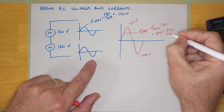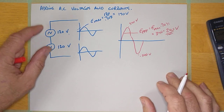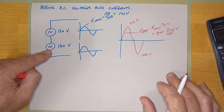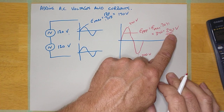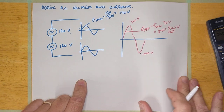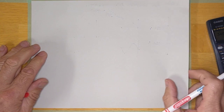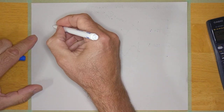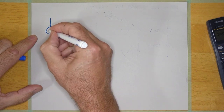So I just spent a long time basically telling you that if I did 120 AC RMS plus 120 AC RMS, it gives me 240 volts. Why are we spending all this time on that? Because you could come across a situation where two AC voltages are not in phase.